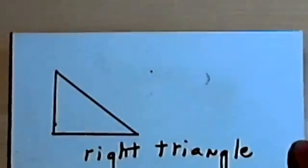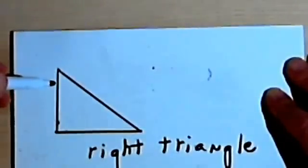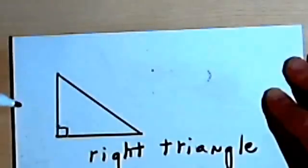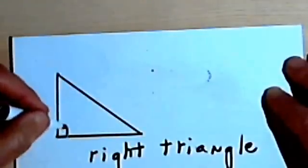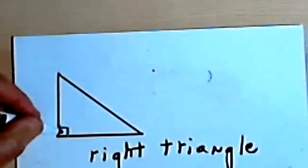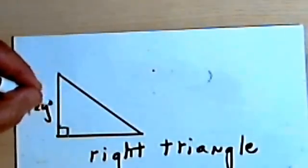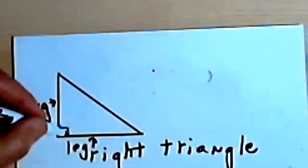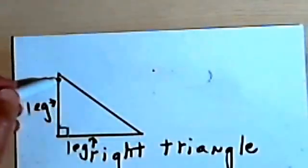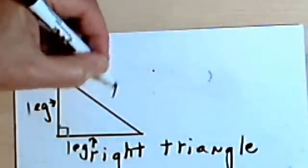One more kind of triangle. This is a right triangle, and it's probably the kind of triangle you'll be dealing with most in your math courses. In a right triangle, you have a right angle. Now we use special words for the sides when we talk about right triangles. The two sides next to the right angle are called legs. So this is a leg over here, and this is a leg on the bottom. The long side, which will always be the side opposite the right angle, is called the hypotenuse.